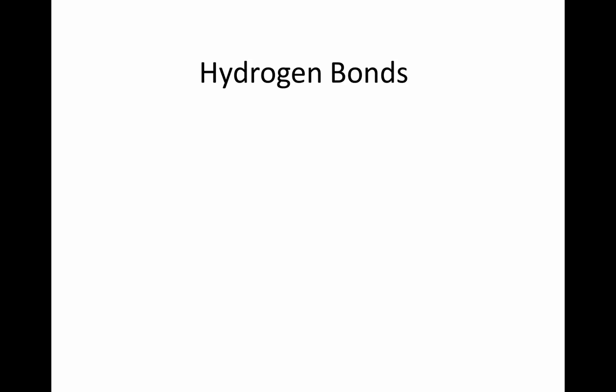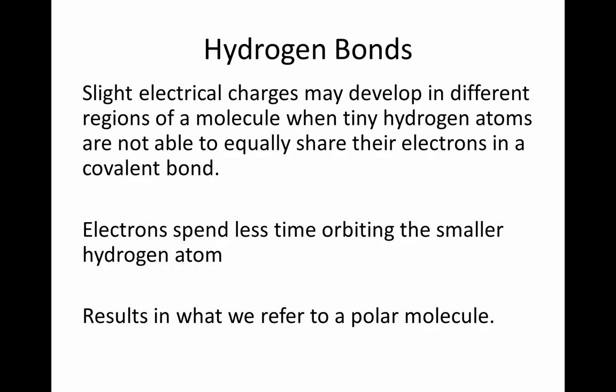Another type of bond, the hydrogen bond, is not like an ionic or covalent bond formed by the donating, gaining, or sharing of electrons. Slight electrical charges may develop in different regions of a molecule when tiny hydrogen atoms are not able to equally share their electrons in a covalent bond. Electrons spend less time orbiting the smaller hydrogen atom, resulting in what we refer to as a polar molecule.